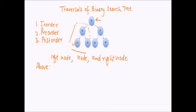We go down to node 10 and check if there is a left subtree. Since the left child of node 10 is null, there is no subtree there. Hence, we can print node 10. Now we come up and go towards the right side of node 10. Is there any node on the right-hand side of node 10? No. So we move back to node 20.